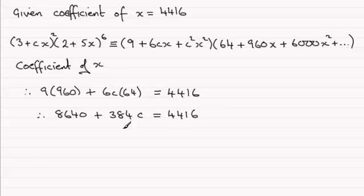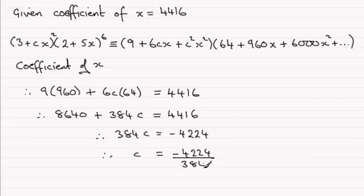We could take away 8,640 from both sides. We therefore have 384c equals 4,416 take away 8,640, which gives us minus 4,224. If I now divide both sides by 384, then I'm going to need a calculator for that one. If you do that, you find out that c turns out to be minus 11.